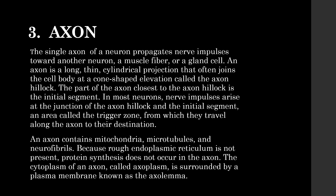An axon contains mitochondria, microtubules, and neurofibrils. Because the endoplasmic reticulum is not present, protein synthesis does not occur in the axon. The cytoplasm of the axon is called axoplasm and is surrounded by a plasma membrane known as the axolemma.